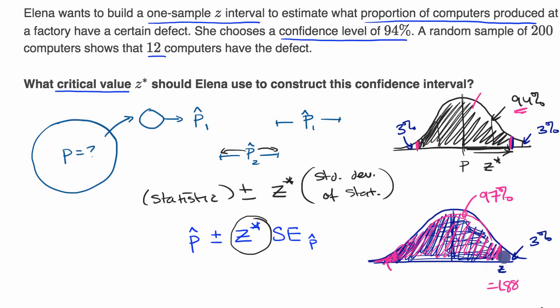But to answer their question, what critical z value or critical value z star? This is going to be 1.88. And we're done.